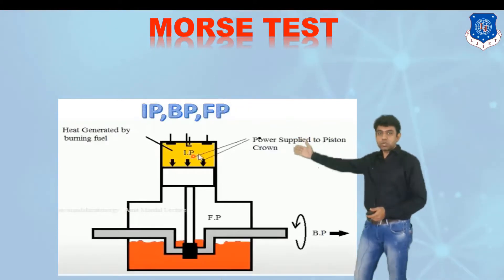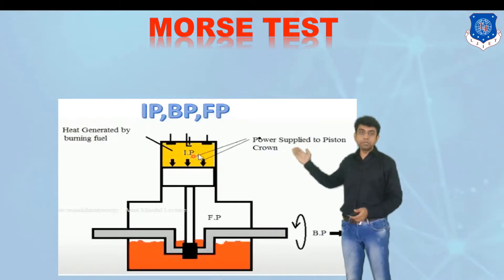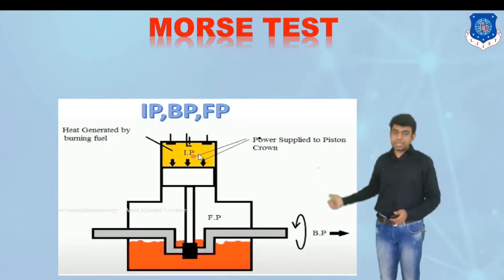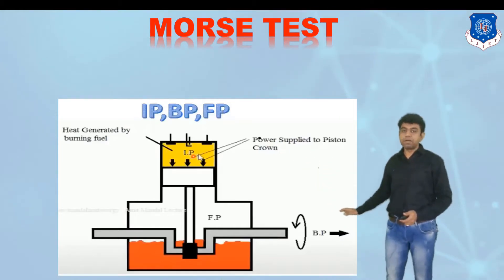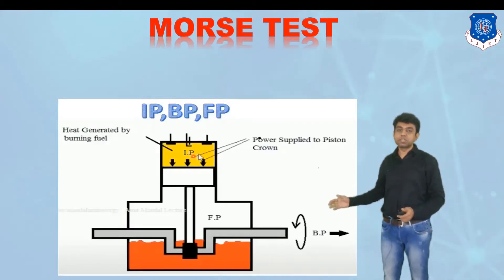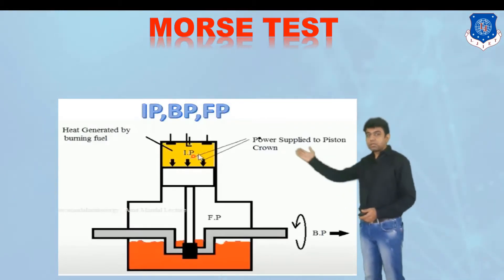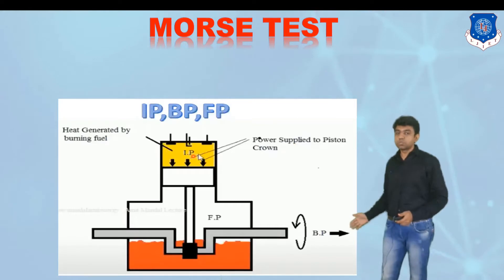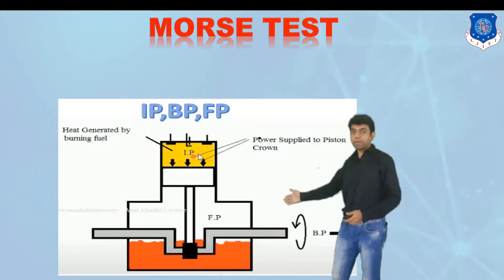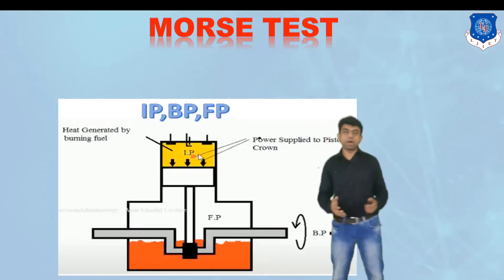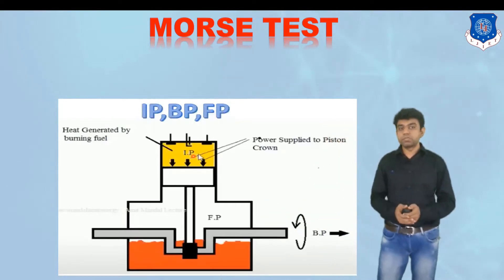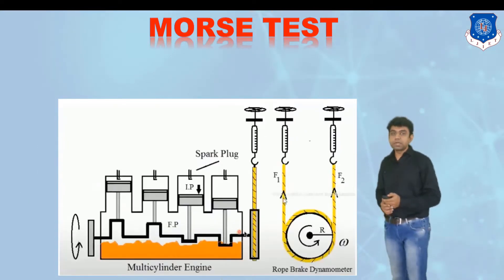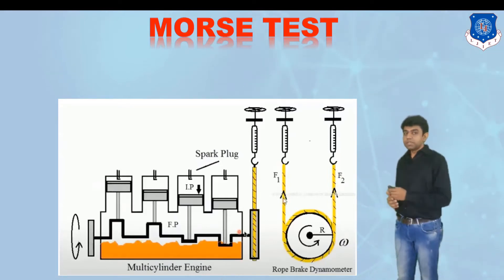There are three different powers in the case of an engine. The first is indicated power — the power supplied to the piston crown, generated due to the burning of fuel. Next is brake power, which is the power available at the engine shaft. The indicated power has a higher value compared to brake power, and the difference between them is the friction power loss.